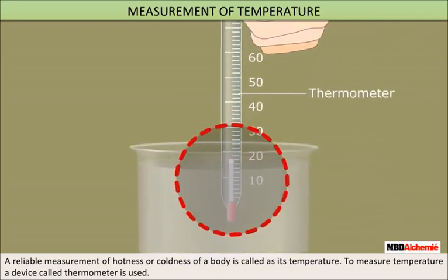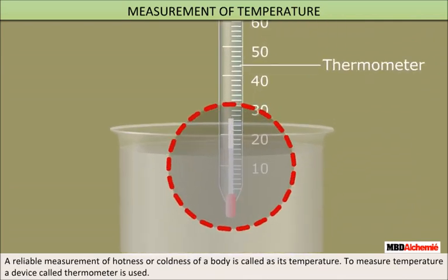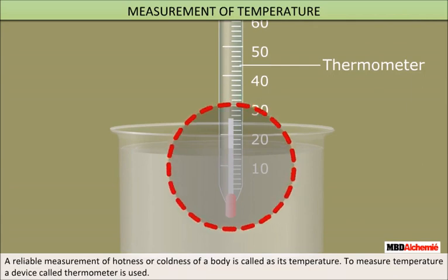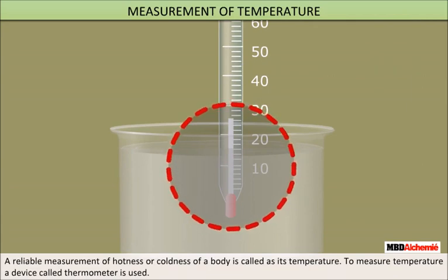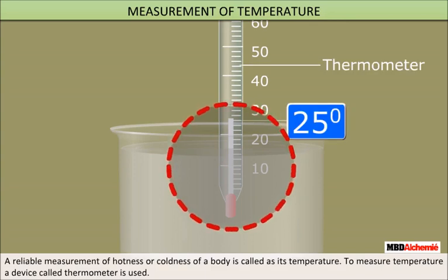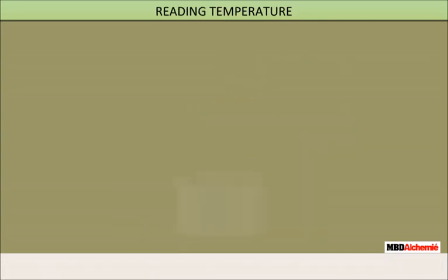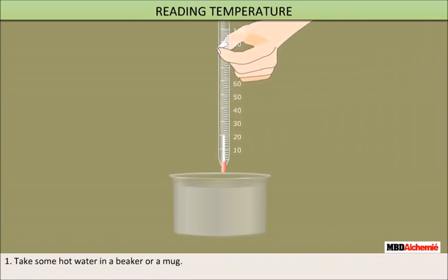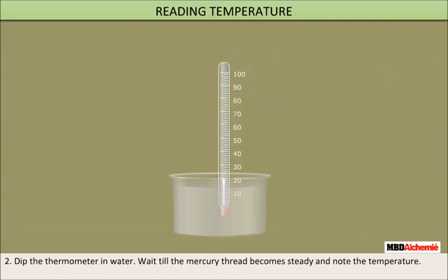Measurement of temperature: a reliable measurement of the hotness or coldness of a body is called its temperature. To measure temperature, a device called a thermometer is used. Take some hot water in a beaker or a mug, dip the thermometer in water, and wait till the mercury thread becomes steady and note the temperature.